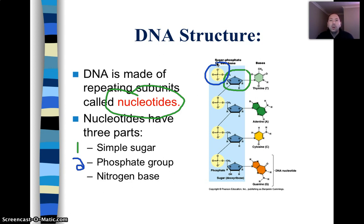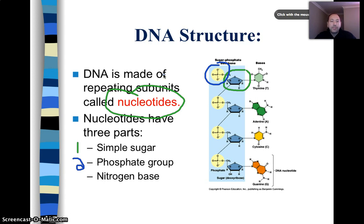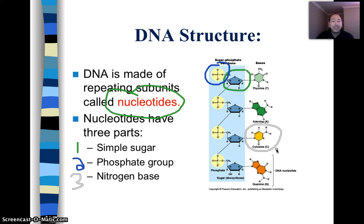In terms of a ladder, the backbone would be like the side rungs of a ladder. If I had to climb up to the second story of a house to put up some holiday lights, I'm going to hold on to those handrails — that's really what these two things are. The third thing is a nitrogen base, and there are actually four different types: thymine, adenine, cytosine, and guanine.